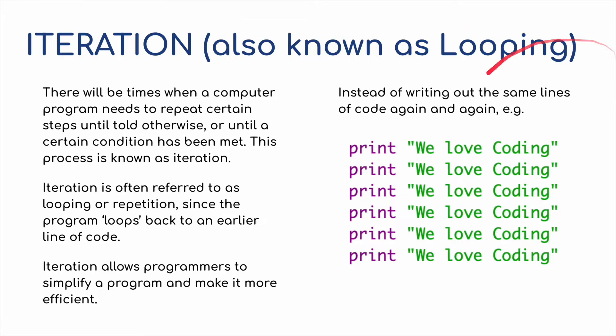We move on then to iteration. This is the looping element of a program, and we might have used loops before in terms of while loops and for loops. But what are loops? There are times when a computer program needs to repeat certain steps until told otherwise, or until a certain condition has been met. This process is known as iteration. Iteration is often referred to as looping or repetition, since a program loops back to an earlier line of code.